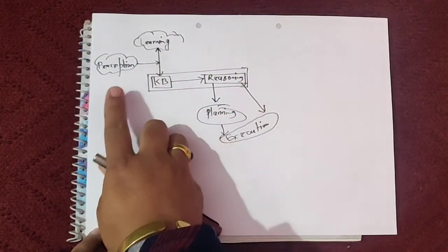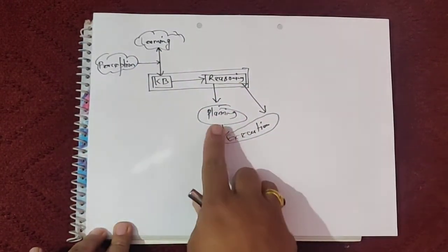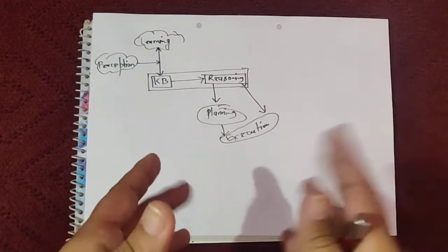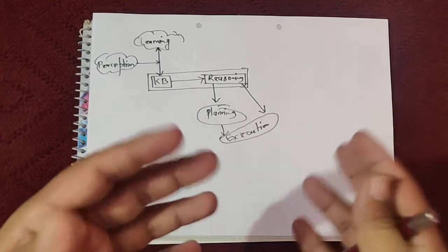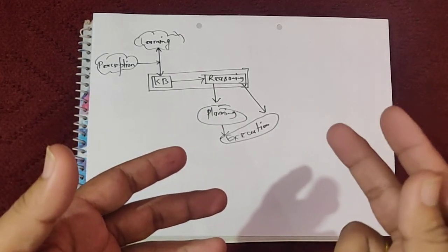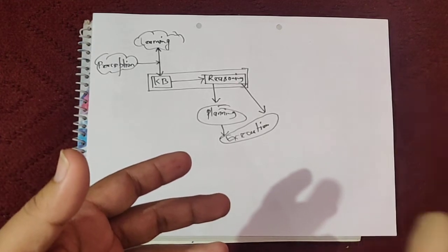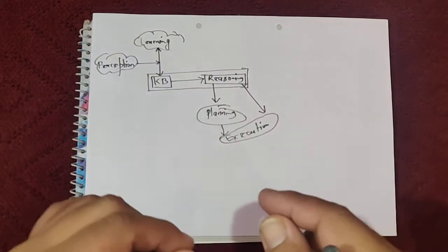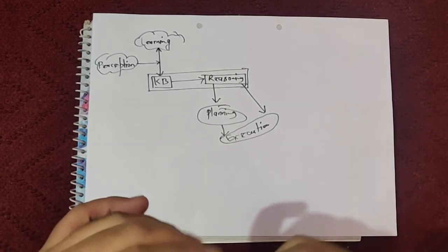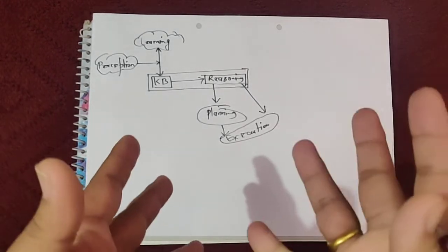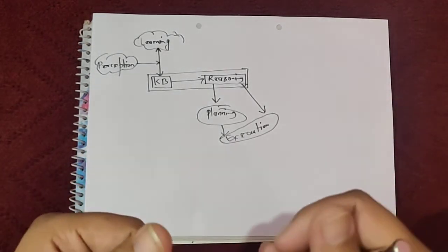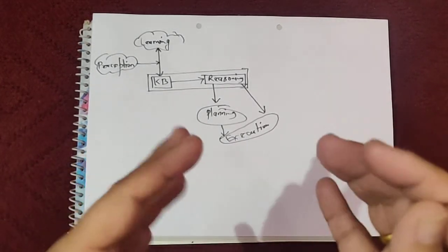The knowledge base is the set of sentences in a formal language. The declarative approach is to build an agent and tell it what it needs to know. It then asks itself what to do, and that answer or response should follow from the knowledge base.